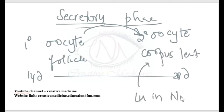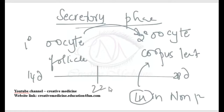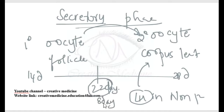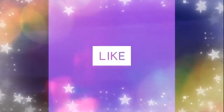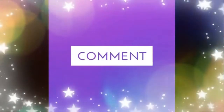The corpus luteum starts growing under the effect of luteinizing hormone. On day 22 of the cycle, or 8 days after ovulation, the corpus luteum attains its maximum activity and size.